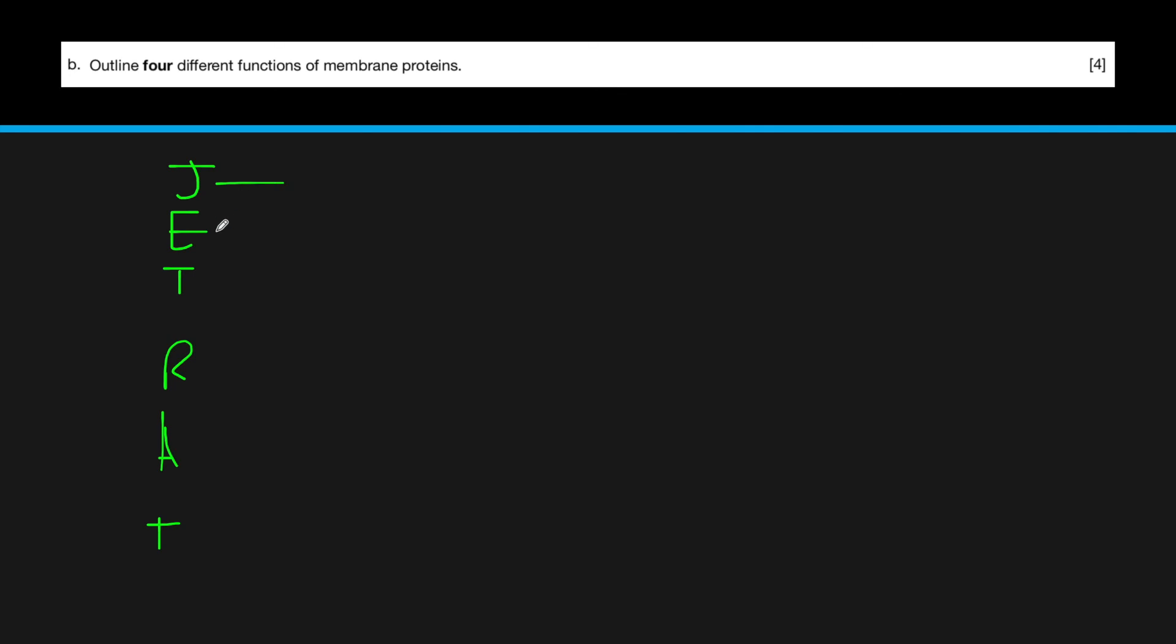JETRAT: junction, enzyme bonding or enzyme holding, transport which is the integral proteins, recognition, anchorage, and transduction. Remember, don't be confused by transduction, it's hormone binding sites. That's pretty much all you need to know for Topic 1.3. I'll see you next time. Bye.